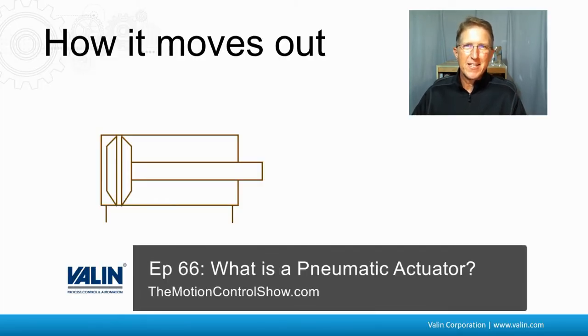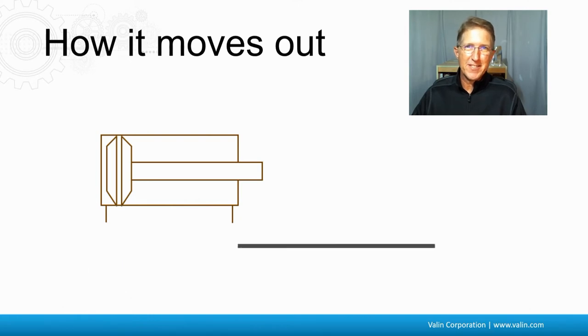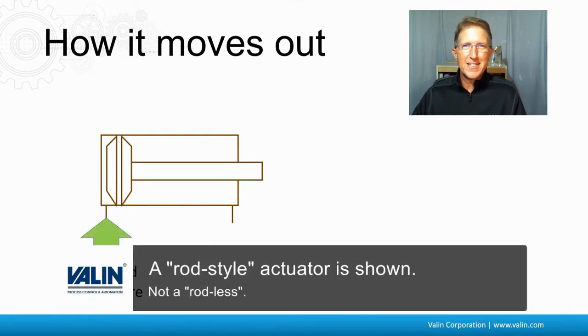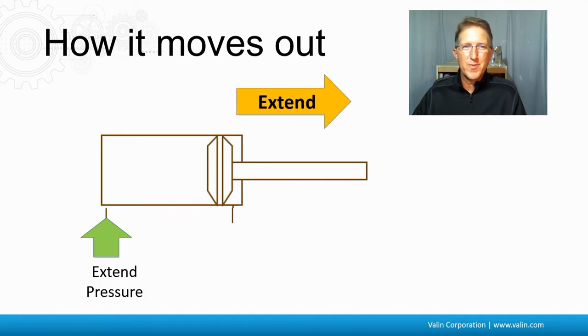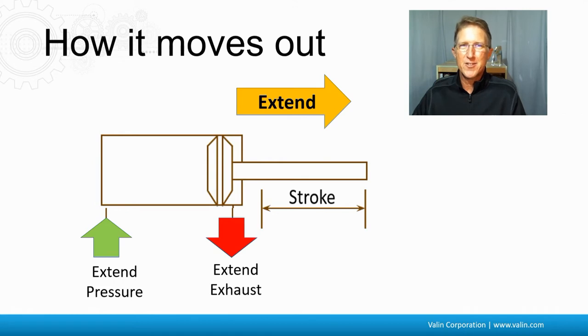Just to remind you, as I explained in the pneumatic actuator episode last time, a rod-style actuator has an extend pressure that comes in one side, pushes the rod with the piston, and it has the extend exhaust, and that makes it extend a certain amount of stroke.